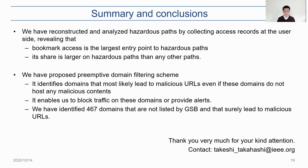In conclusion, we have reconstructed and analyzed hazardous paths by collecting access records at the user site, revealing that bookmark access is the largest entry point to hazardous paths and its share is larger on hazardous paths than any other path. We proposed a preemptive domain filtering scheme which identifies domains that most likely lead to malicious URLs, even if those domains do not host any malicious contents. This method enables us to block traffic on these domains or provide alerts — we identified over 400 such domains not listed by Google Safe Browsing that surely lead to malicious URLs. There are some limitations of this work, but we hope it will contribute to the security of the web. Thank you very much for your kind attention.